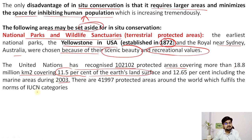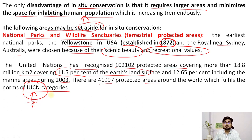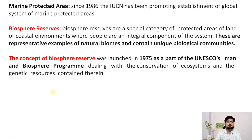There are more than 42,000 protected areas in the world that fulfill the norms of IUCN — the International Union for Conservation of Nature. I would recommend viewers to visit the IUCN website to look into reports on in-situ conservation. Marine protected areas have also been promoted by IUCN since 1986, recognizing that marine ecosystems are equally important.